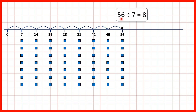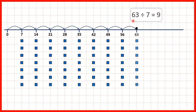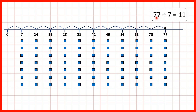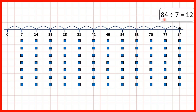56 divided by 7 is 8. 63 divided by 7 is 9. 70 divided by 7 is 10. 77 divided by 7 is 11. And 84 divided by 7 is 12.